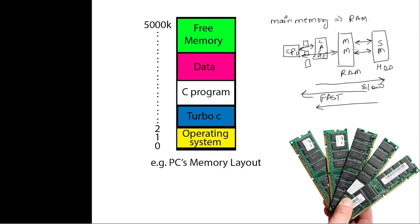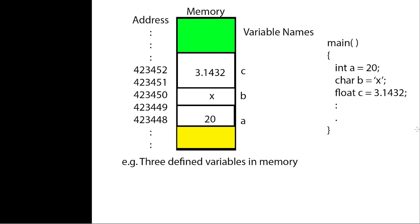Whenever you execute a program, that program first gets stored in main memory — some memory is allocated to it and then it is executed. In a diagram of main memory, there are data variables stored in it. For example, when executing a C program, that program, the compiler, and the operating system all reside in main memory. The OS resides in the lower portion, and free space is in the upper portion. Whenever data is stored in memory, there is some kind of address associated with it.